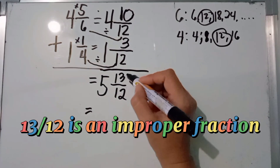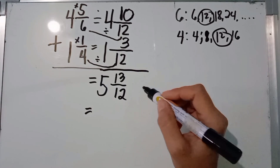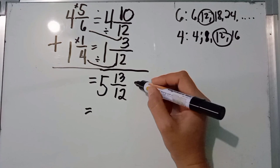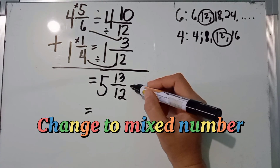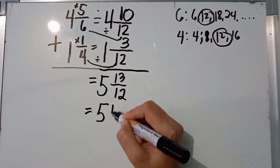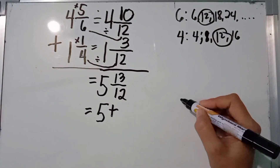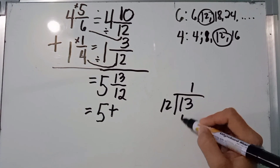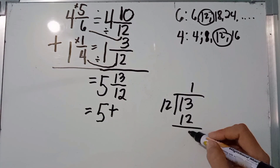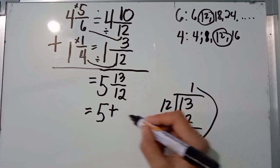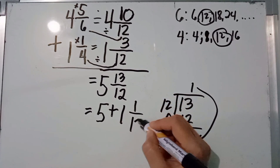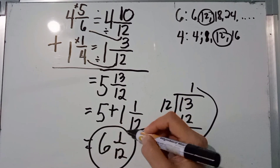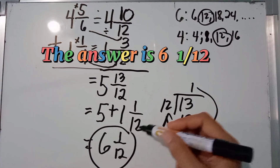Looking at our answer, 13 over 12 is an improper fraction. So we need to convert it to a mixed number. 13 divided by 12 is 1 remainder 1. So 13 over 12 becomes 1 and 1 over 12. Adding: 5 plus 1 equals 6. The final answer is 6 and 1 over 12.